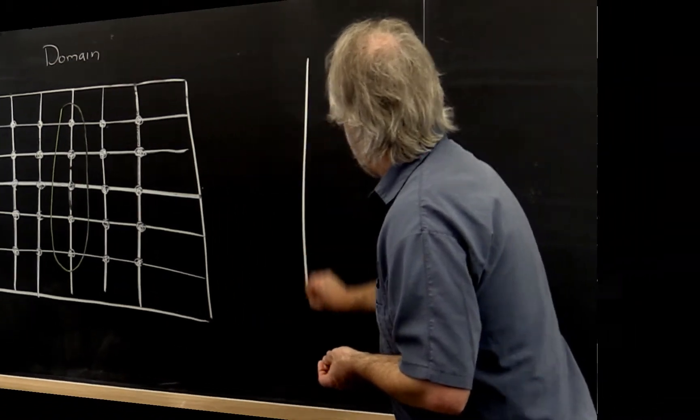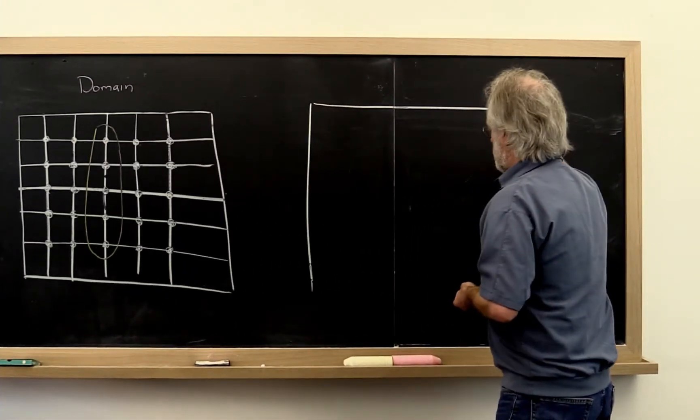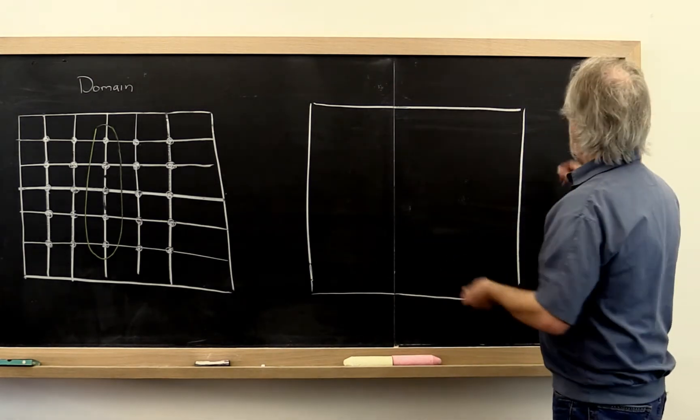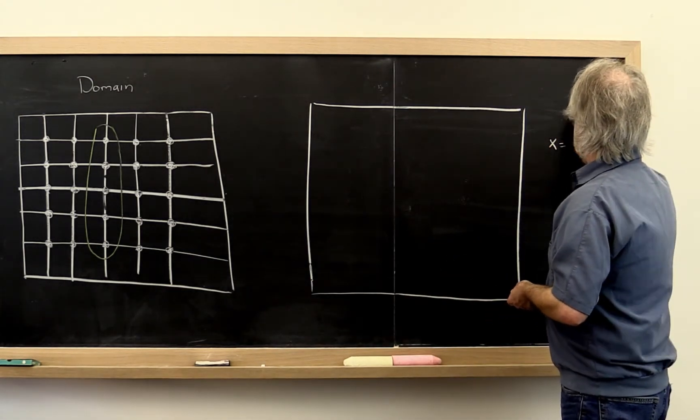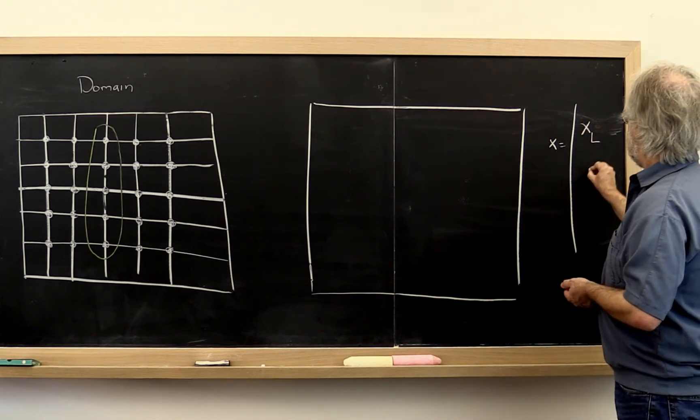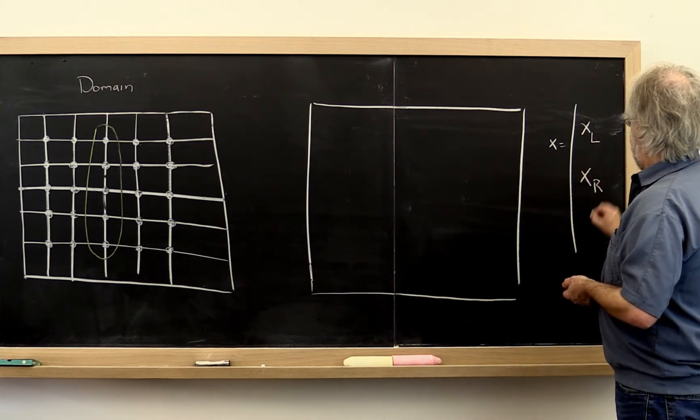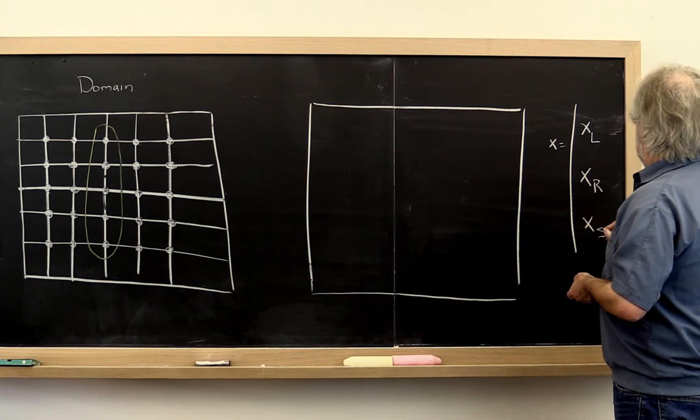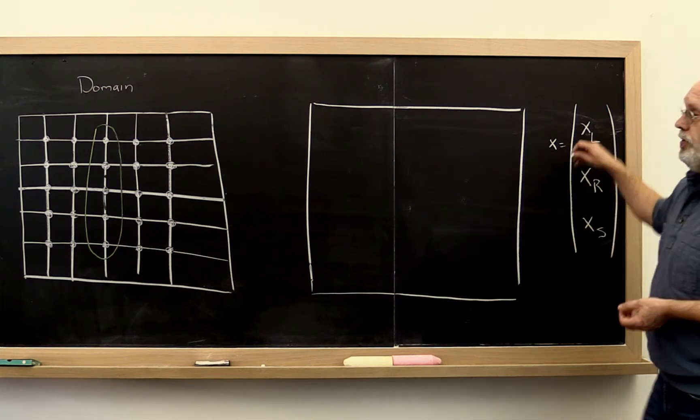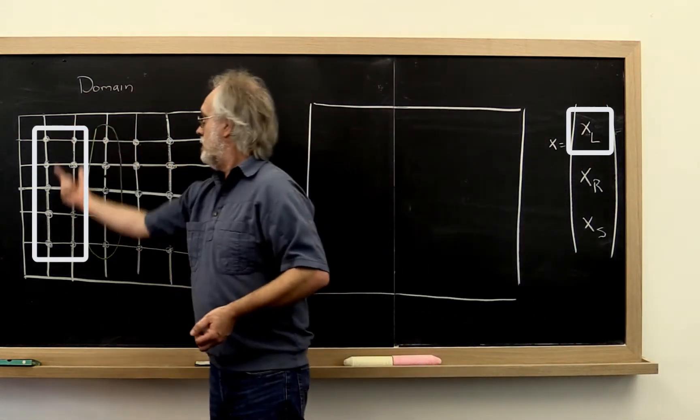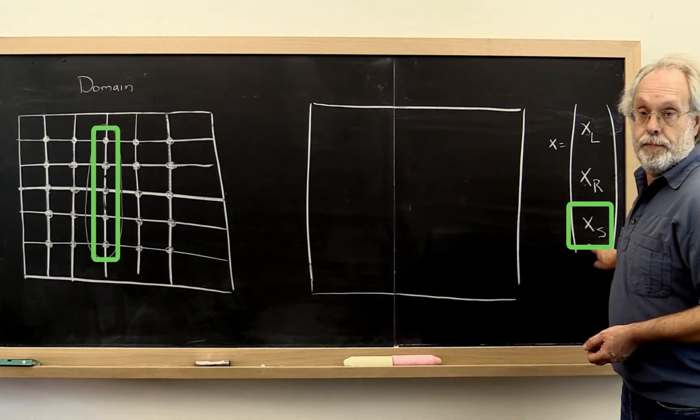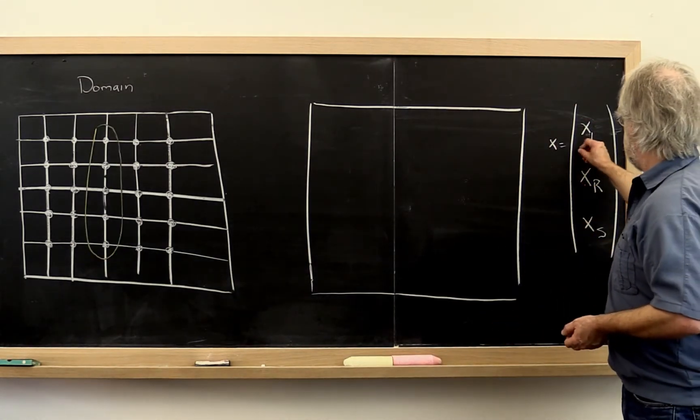Well, here we have our matrix. And what we really are saying is, let's take our solution vector x and let's think of it as a sub vector x sub l, a sub vector x sub r, and a sub vector x sub s, where these are the values associated with this left sub domain, the right sub domain, and the separator. So now we have partitioned this.